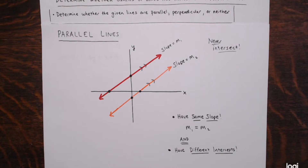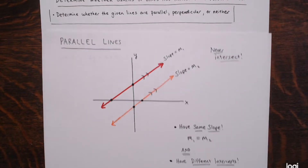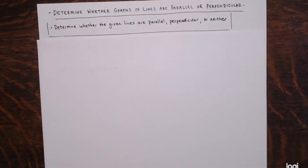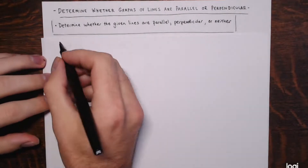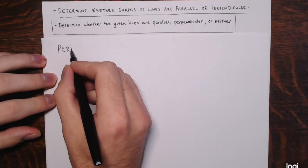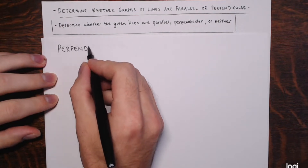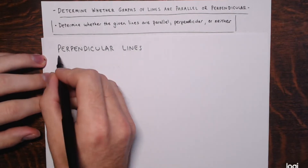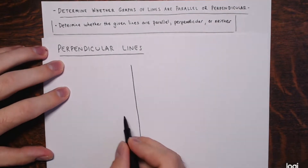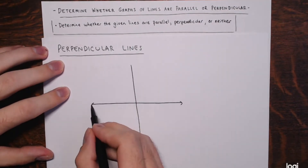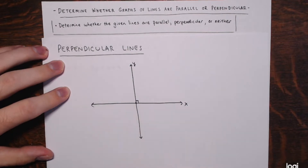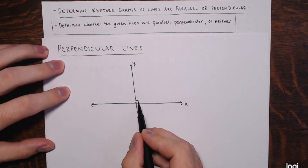Perpendicular lines do intersect, but they intersect in a special way. They don't just cross any which way — they cross at a 90-degree angle, or a right angle. For example, the x- and y-axis are perpendicular: they meet at a 90-degree angle, marked with a little box for a right angle.